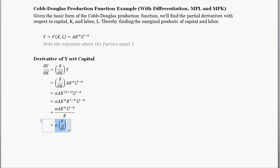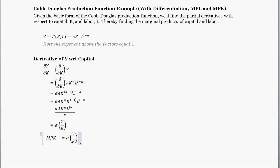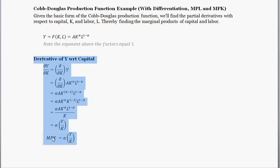So this is our answer: the derivative of production with respect to capital is equal to alpha times Y over K. It's also equal to all the other equivalent forms above. Y divided by K is like the average output given a quantity of capital. The first derivative of output with respect to capital is the marginal product of capital — the value of an additional unit of capital, or how much extra production you expect if you add one more unit.